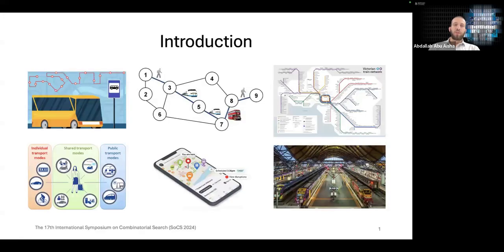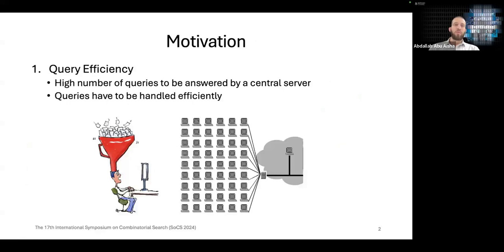Public transport journey planning applications have become essential part of people's everyday life thanks to the remarkable advances in routing algorithms. However, there's still some room for improvement.